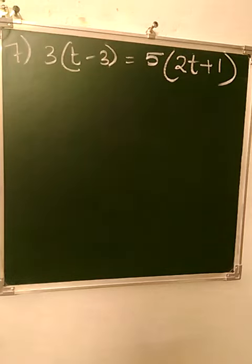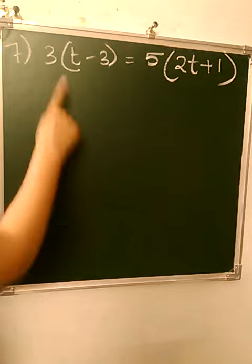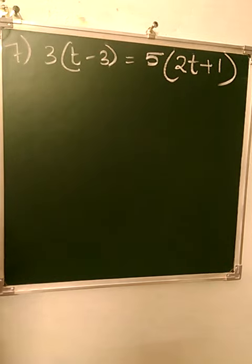Starting with question number 7: simplify and solve the following linear equations. We have to make it simple and then solve. Making it simple means we will remove the brackets and then find the value of the variable given in the question.